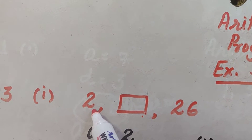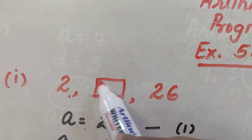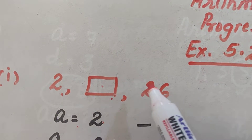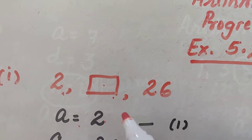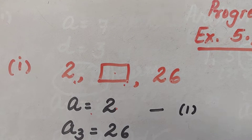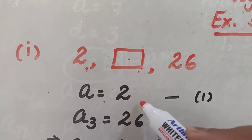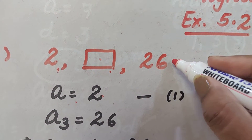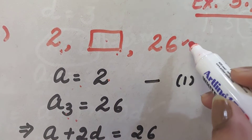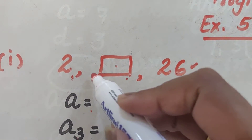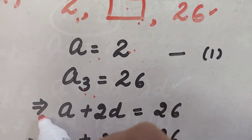The first term is called 'a' and 'a' is given. But no two consecutive terms are known here because this term is missing, so we are not able to find 'd' directly. When we know two consecutive terms, 'd' can be easily found. So we focus on what is given: 'a' is 2, and the third term a₃ is 26.